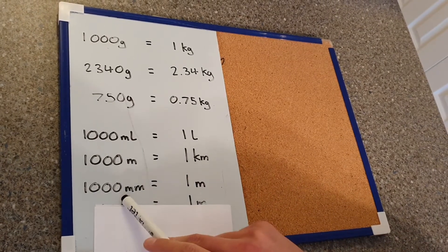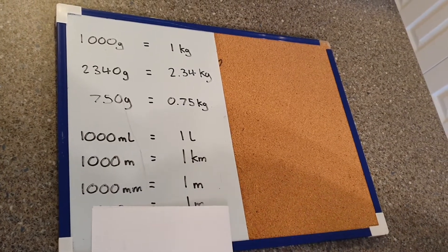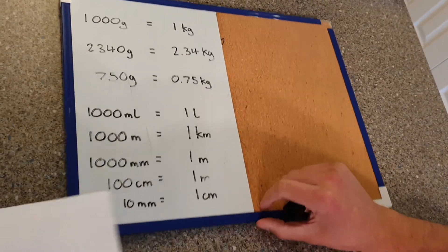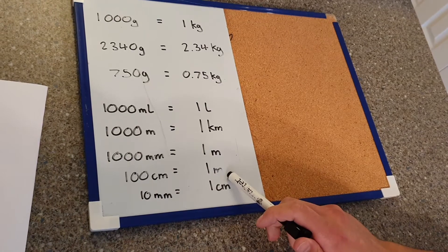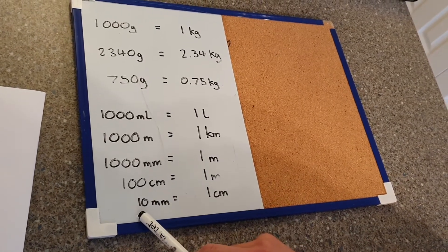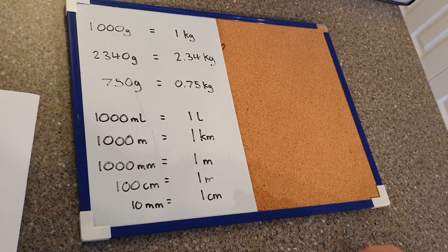A thousand millimetres in one metre, and then it changes slightly if we use centimetres. So we have a hundred centimetres in one metre and we have ten millimetres in one centimetre.